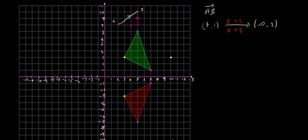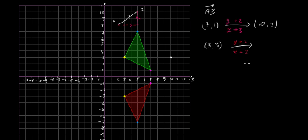Let's do the same to the second point, which is (3, 3). We're going to add 3 to x and add 2 to y. This gives us 3 plus 3 equals 6, and 3 plus 2 equals 5. So we go out to 6 and up to 5. That's our second translated point at (6, 5).